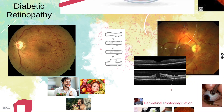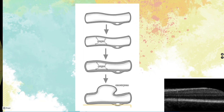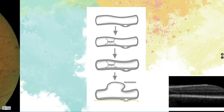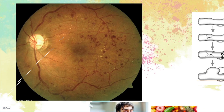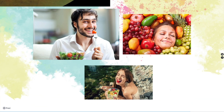Now let's focus on diabetic retinopathy. The fundamental core principle is that poor blood sugar leads to damage of your blood vessels, and these blood vessels can bleed. We see these blood spots in non-proliferative diabetic retinopathy. At this stage, the treatment is diet and exercise and good sugar control by taking your diabetes medications.